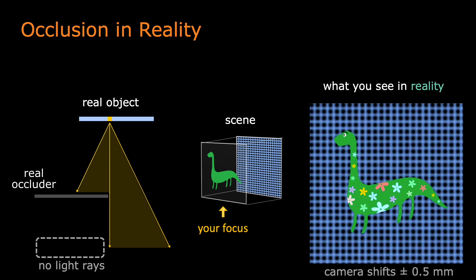In reality, the front dinosaur can block all the light passing through it, and we can see the dinosaur nicely.